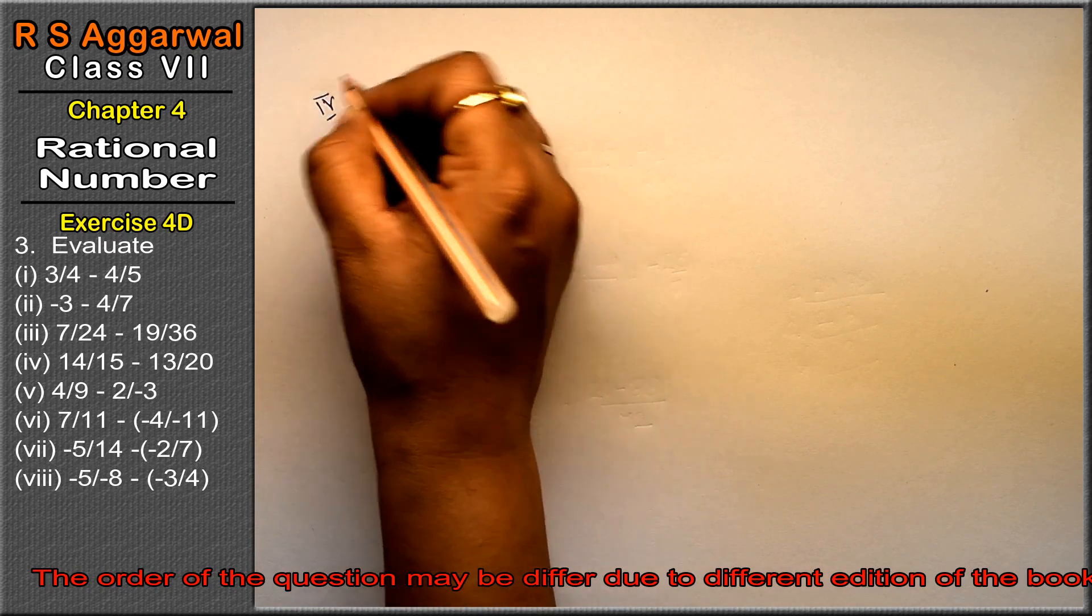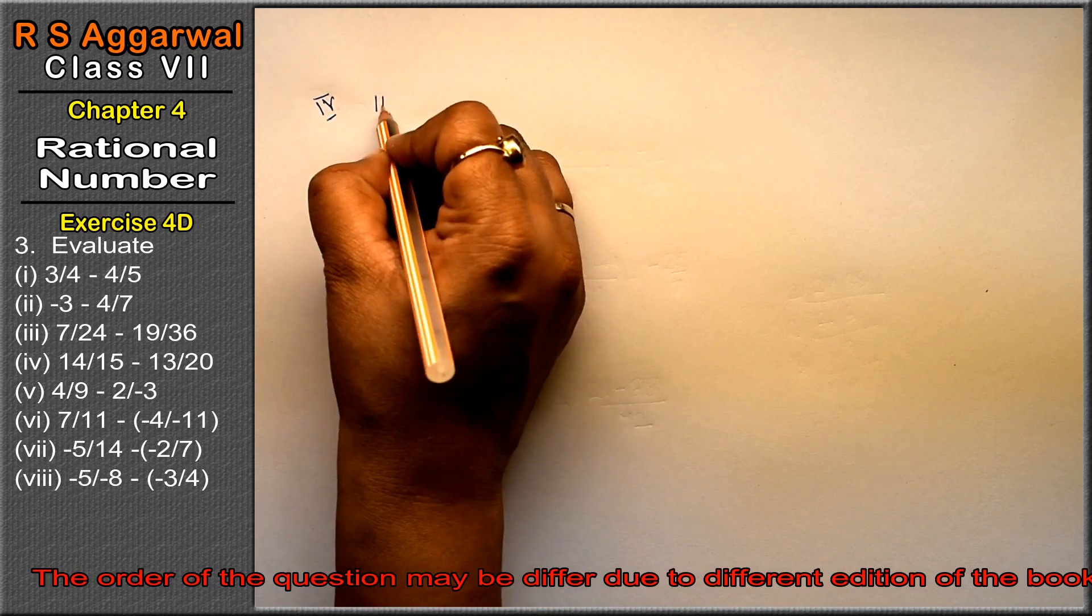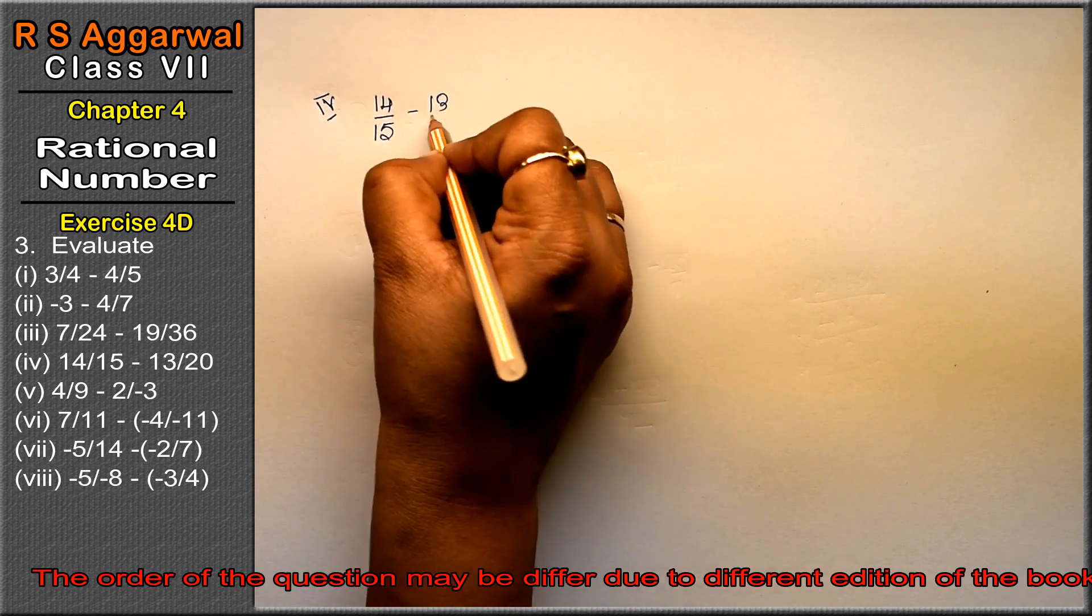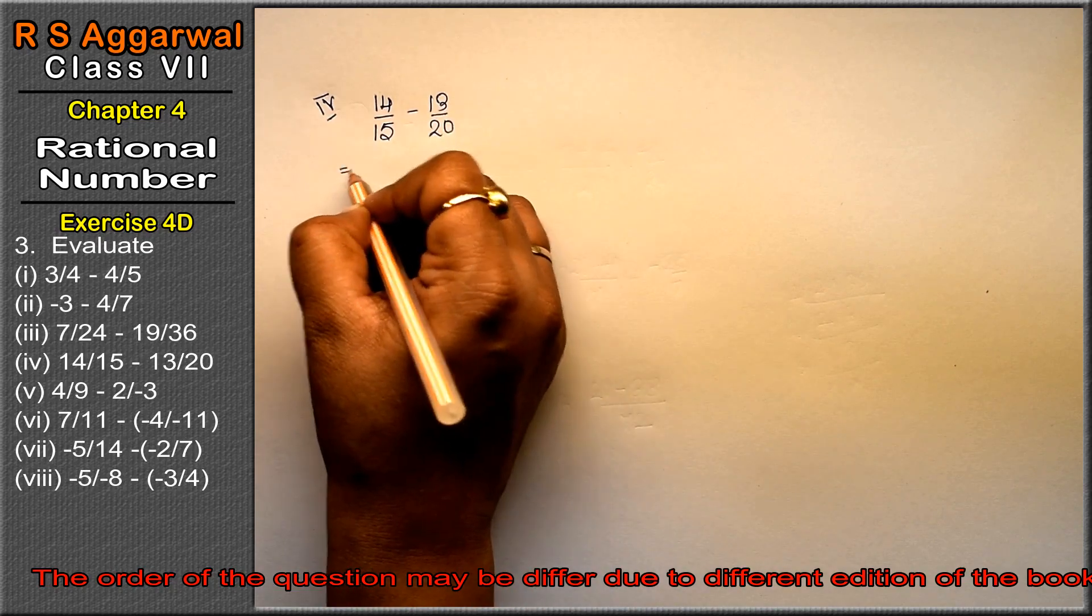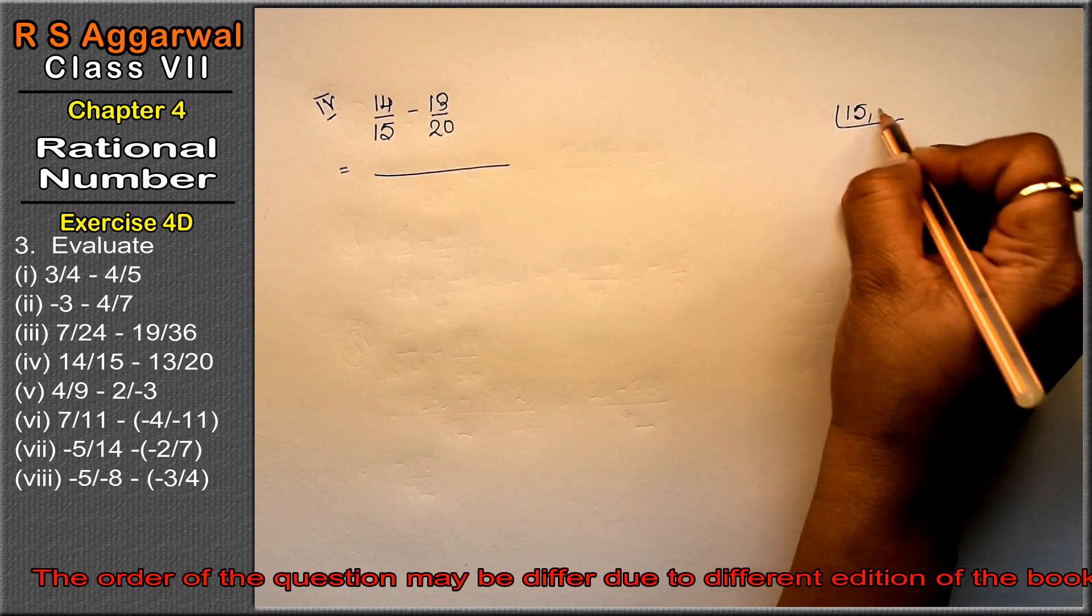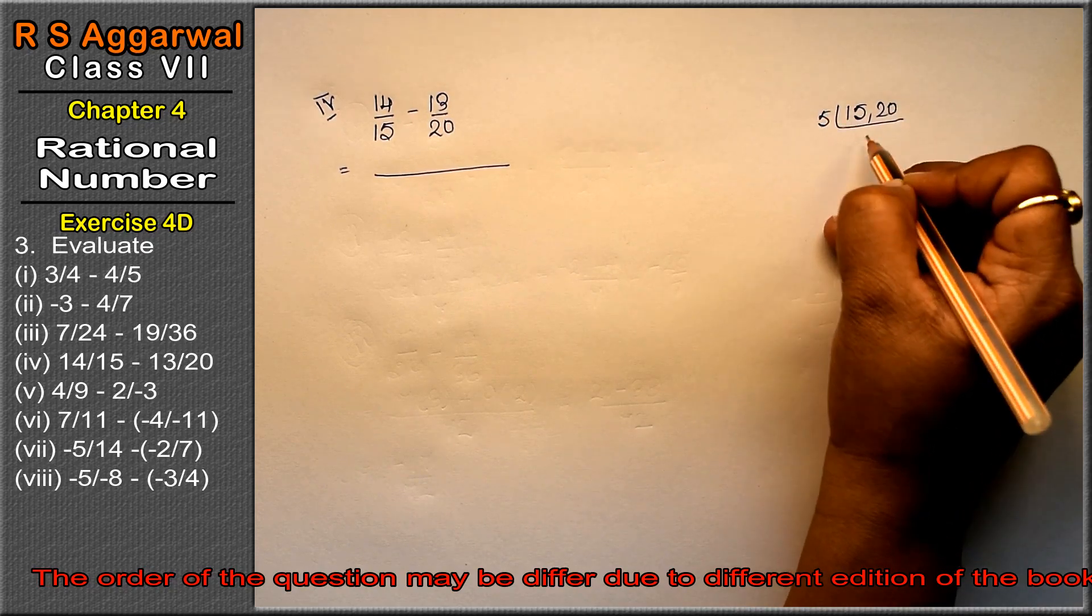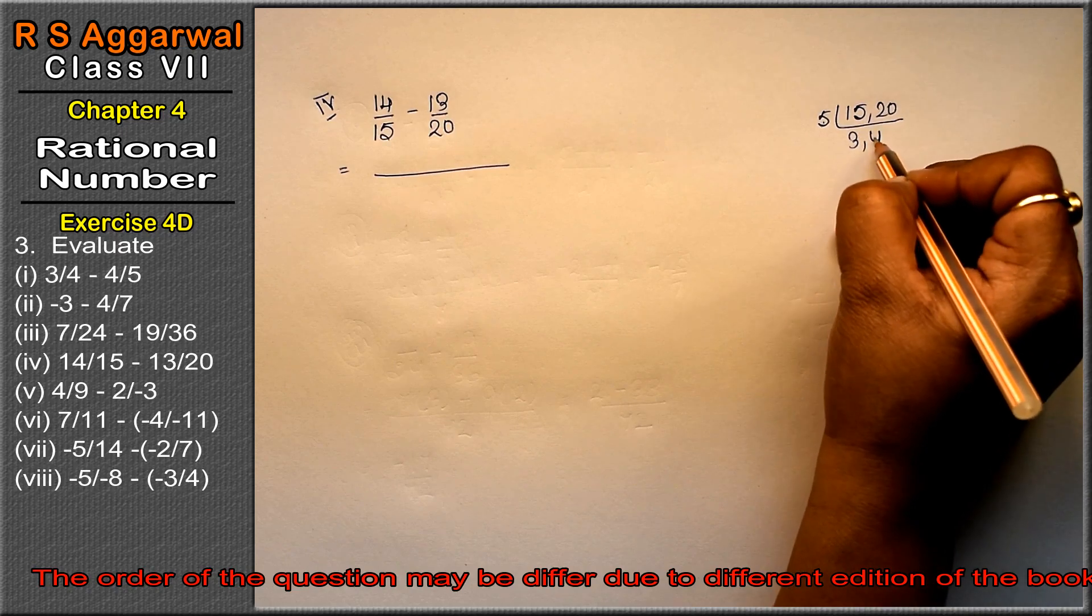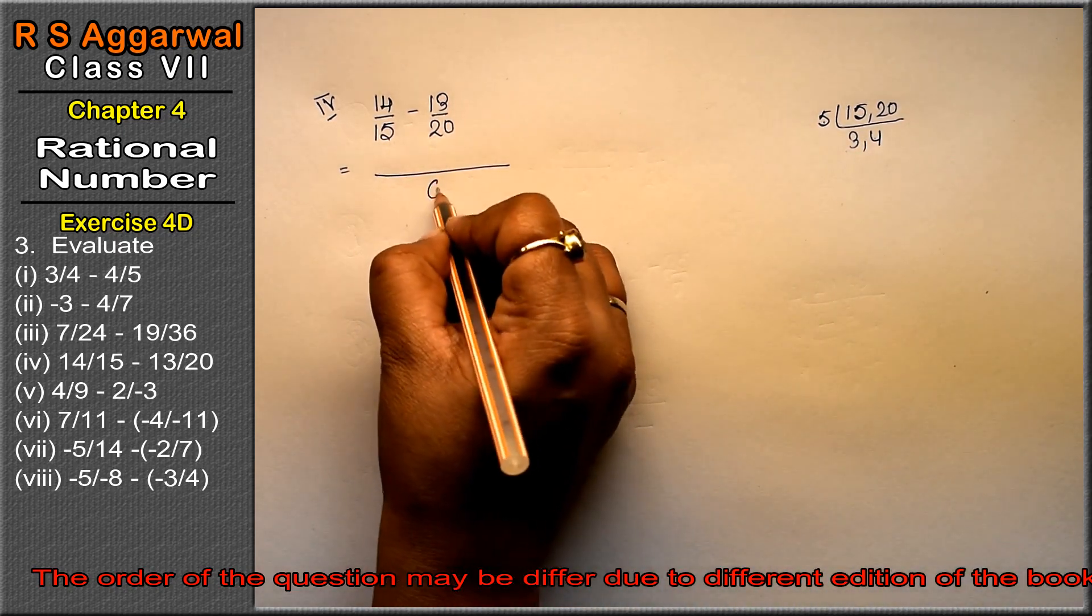Fourth part is 14 upon 15 minus 13 upon 20. LCM of 15 and 20: 5 times 3 is 15, 5 times 4 is 20. So 5 times 4 times 3 equals 60 is the LCM.